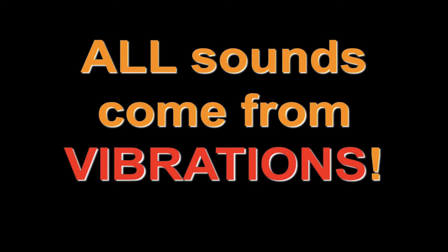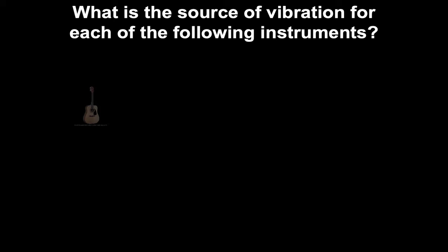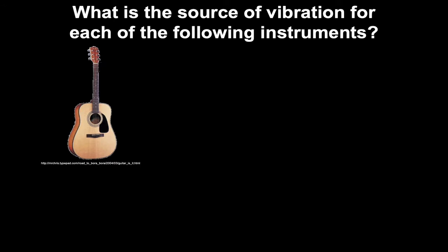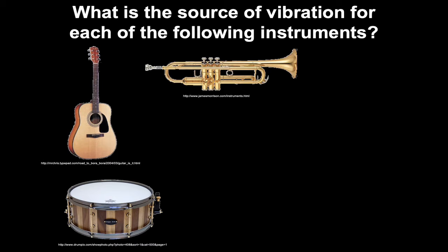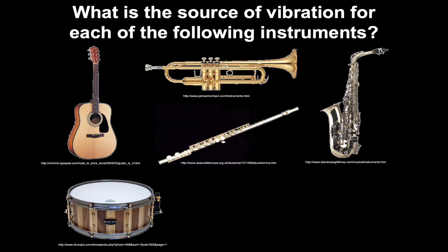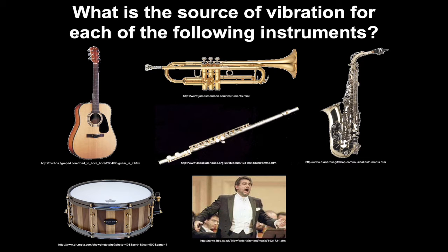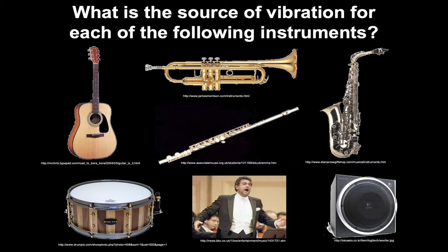First off, all sounds come from vibrations. Every single sound that's ever been created had some sort of vibration as its source. Whether it is a guitar with a vibrating string, a drum with a vibrating drum head, a horn with a vibrating mouthpiece or lips, a saxophone with a vibrating reed, a singer with vibrating vocal cords or a speaker with a vibrating cone, there always has to be a source of vibration to create sound.